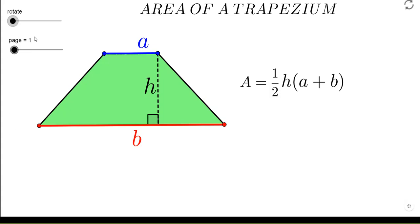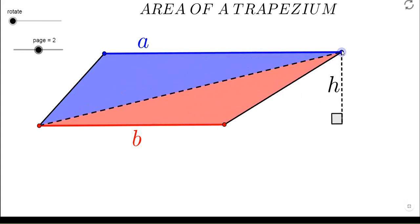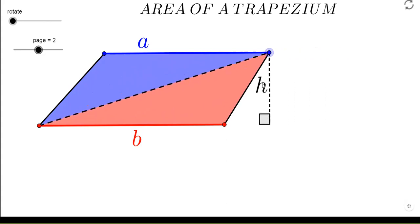In this case we divide our trapezium into two triangles. In both these triangles we observe that the height remains h, either it's the red triangle or the blue triangle. The height of both these triangles is h.